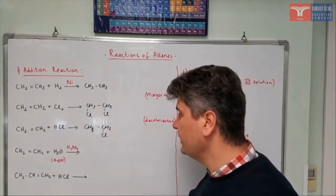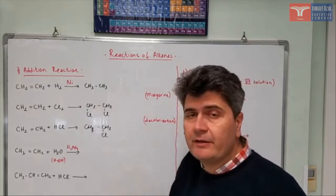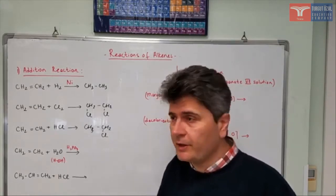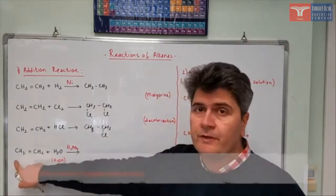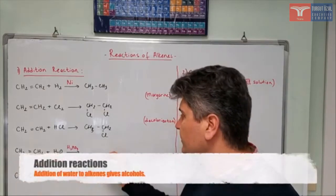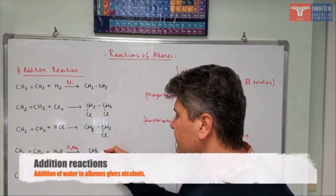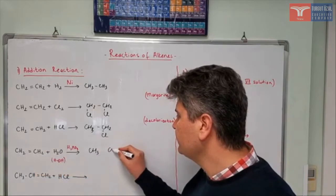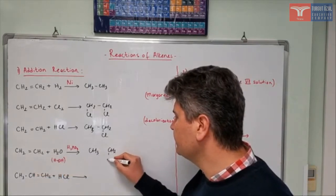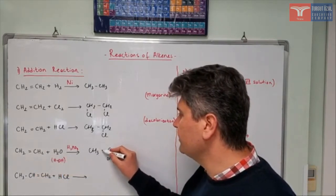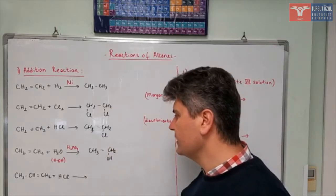Let's add water in the next case. When we say water, you can think of it as HOH. You add hydrogen to one of the carbons and OH to the other one. So the first CH₂ will become CH₃, the second CH₂ will become CH₂OH, and similarly the double bond between them will become a single bond.